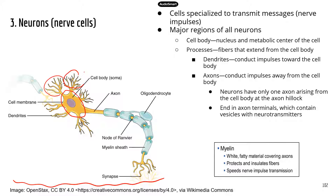The next structure, which is very important when you talk about muscle control, is called the axon. The axon is kind of like a big tail of the neuron. Sometimes neurons can have very long axons so that they can control muscles that are far away from the brain.